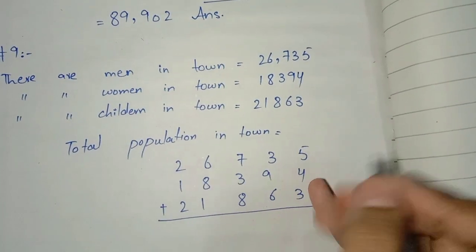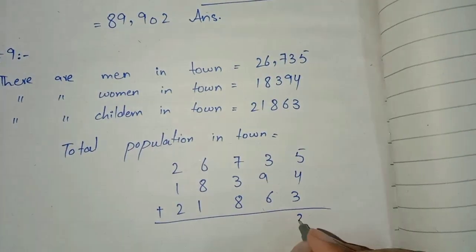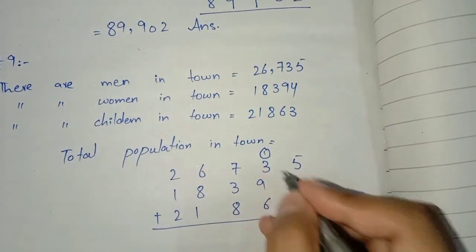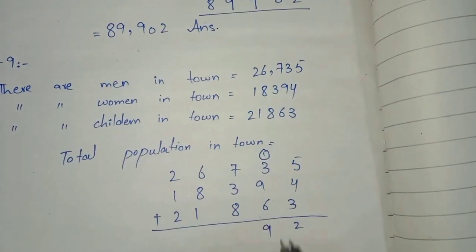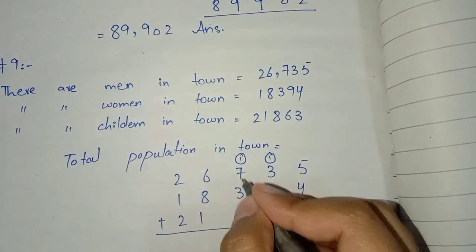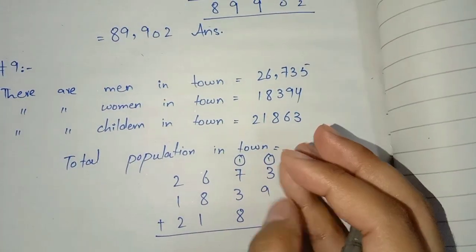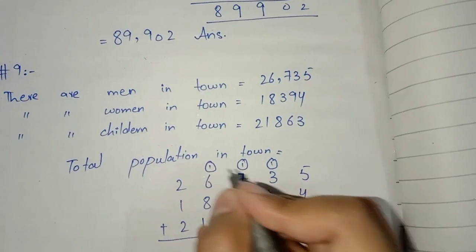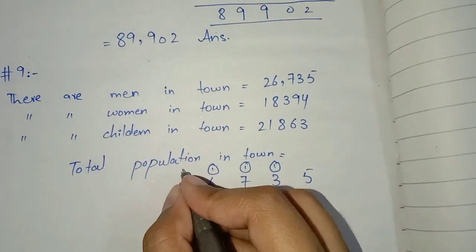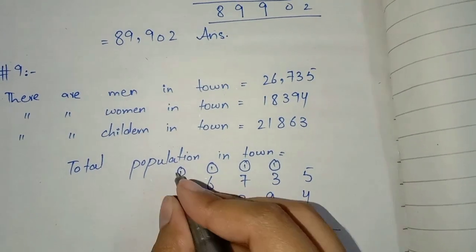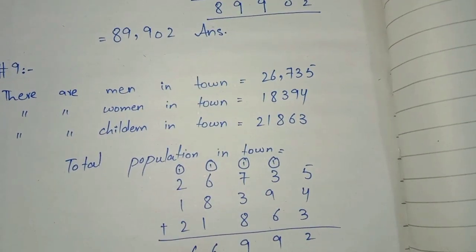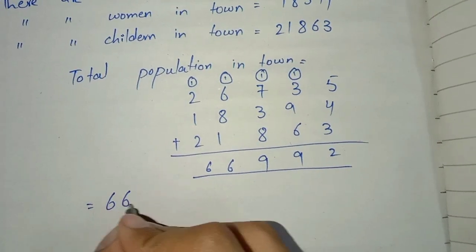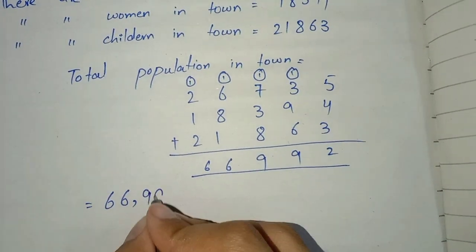Adding column by column: ones 5+4+3=12, carry 1; tens 3+9+6=18+1=19, carry 1; hundreds 7+3+8=18+1=19; thousands 6+8+1=15+carry; ten-thousands 2+1+2=5+carry. So total population thi hamare paas: 66,992.